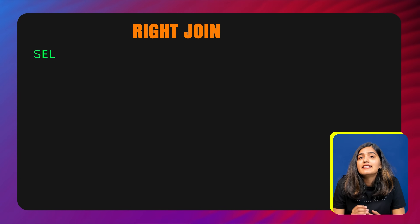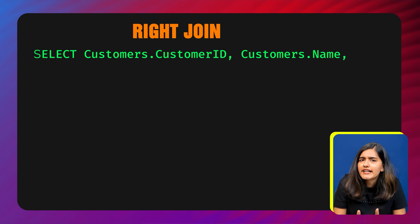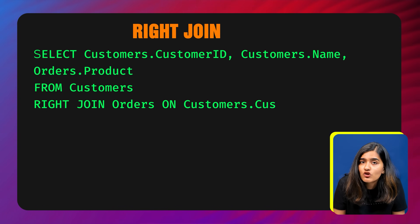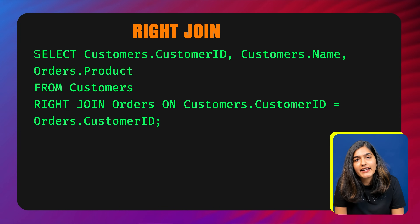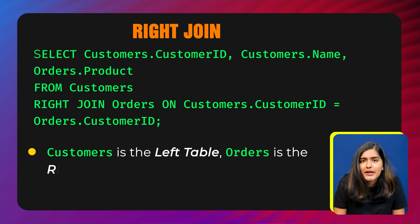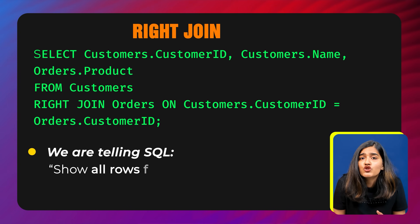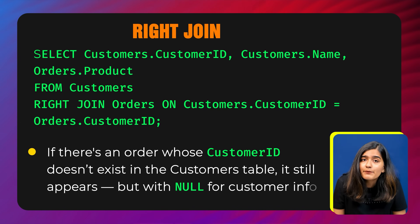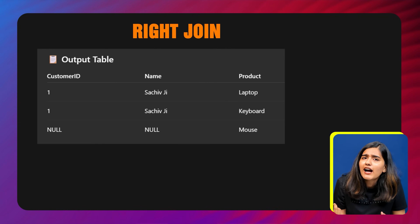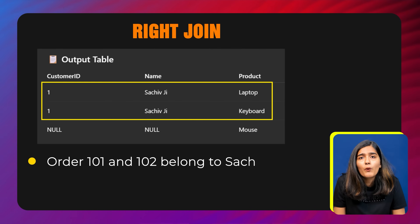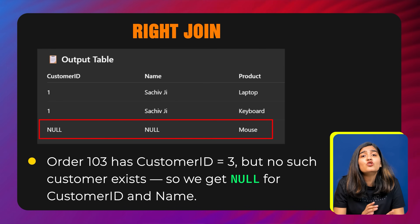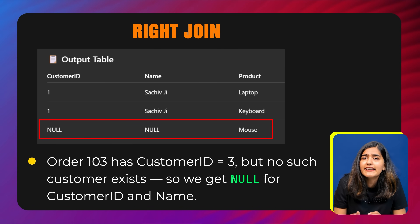Using the same customer and orders tables, the right join query is: SELECT customers.customer_id, customers.name, orders.product FROM customers RIGHT JOIN orders ON customers.customer_id = orders.customer_id. This tells SQL: show all records from orders and match data from customers if available. If there is an order whose customer ID doesn't exist in the customer table, it still appears but with null for customer info. In the output, orders 101 and 102 belong to Sachif so they are matched, but order 103 has a customer ID that doesn't exist in the customer table, so we get null for the customer ID and name.